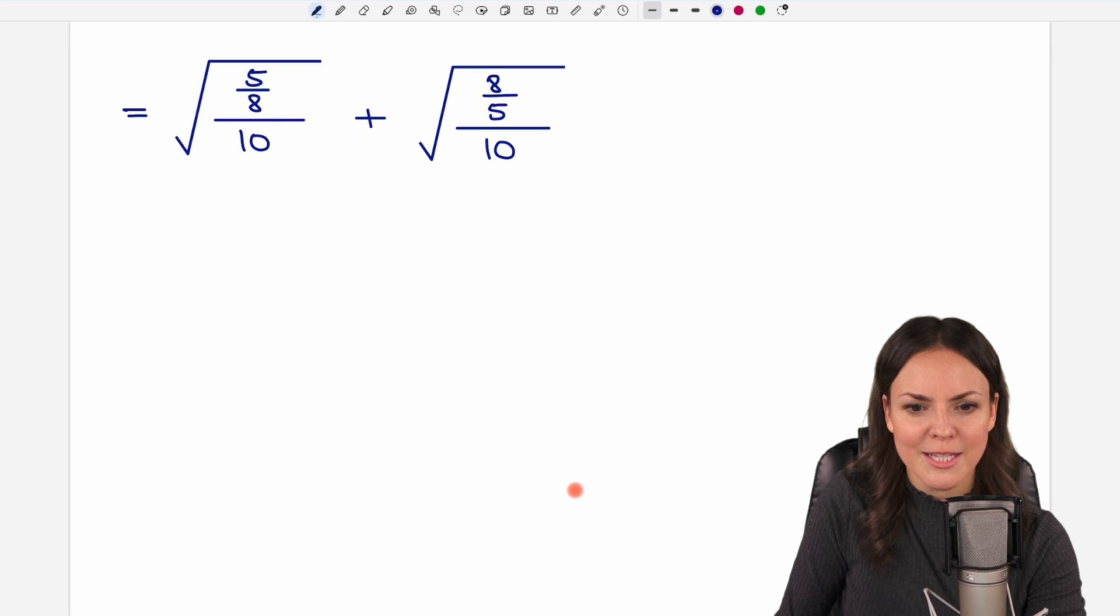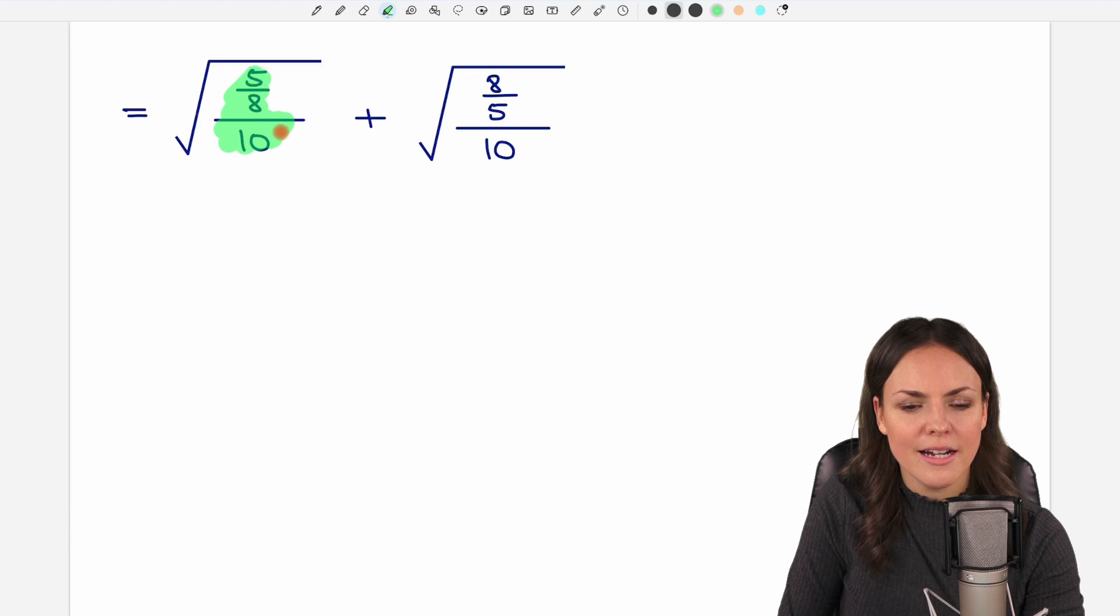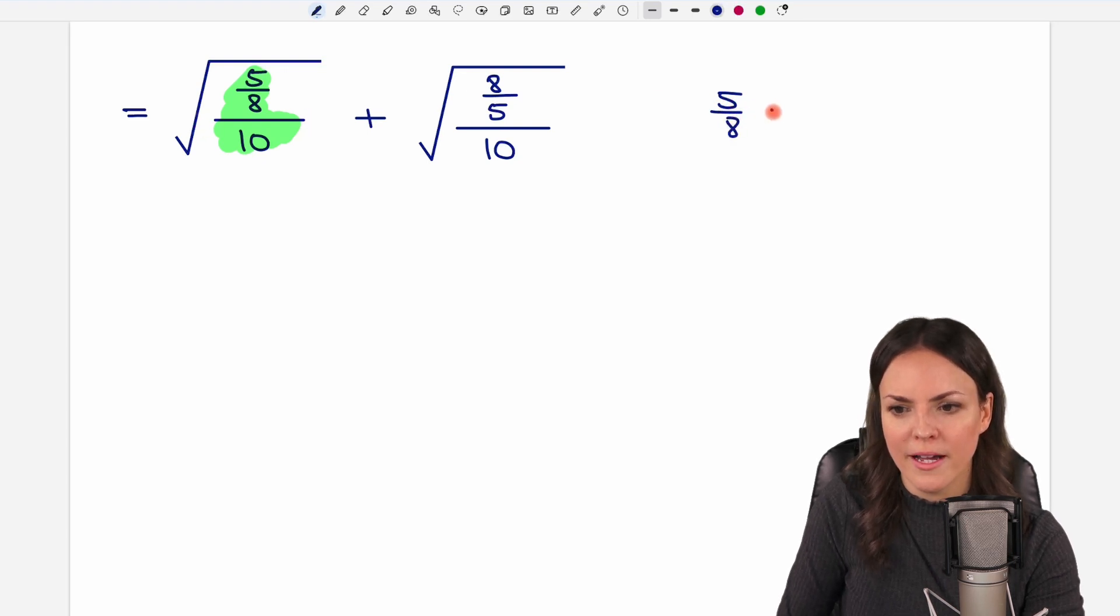I wrote this on the next page again and now we can just take a look at the fractions in our square root and simplify these. So we take the 5 over 8, I write it down here first, and divide this by 10. We can write the 10 as a fraction as well, so 10 over 1, and instead of dividing by a fraction we multiply by its reciprocal. So we make a multiplication symbol here and switch these numbers. The 1 goes on top and the 10 to the bottom.